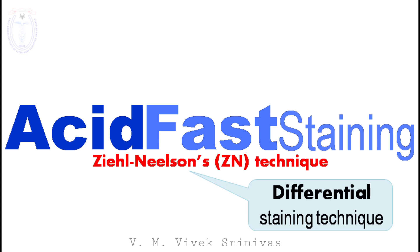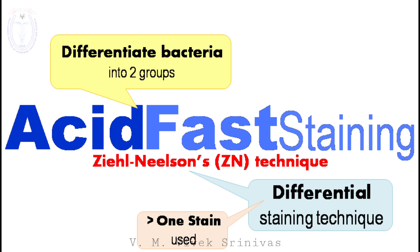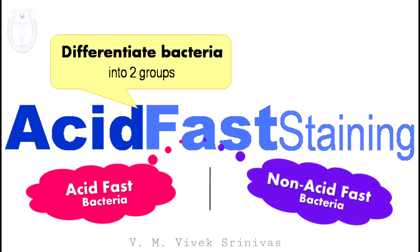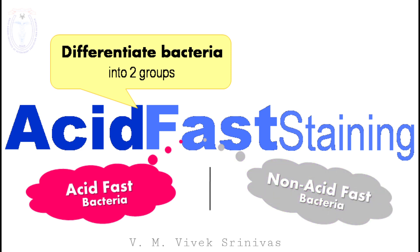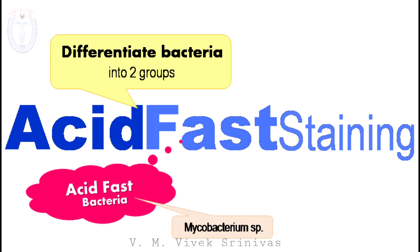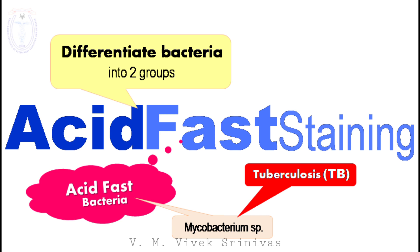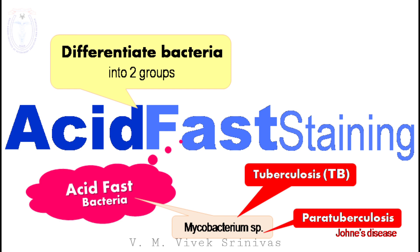This is a differential bacterial staining method where more than one stain is used. This technique is used to differentiate and classify the bacterial organisms into two groups: the acid fast bacteria and the non acid fast bacteria. The very good example of an acid fast bacterium is mycobacterium species, which is the causative agent of tuberculosis in humans and animals, and the causative agent of para tuberculosis in animals.